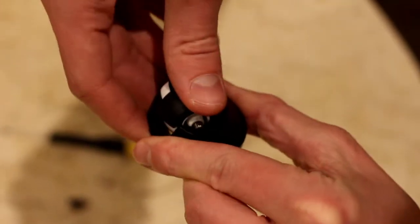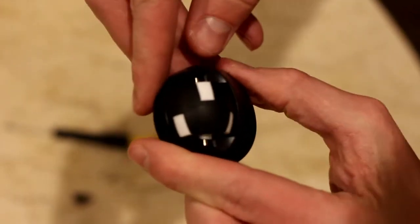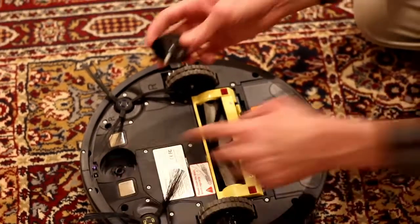Then push the wheel back in, snap it in, and then push the whole assembly back into the vacuum cleaner and you're good to go.